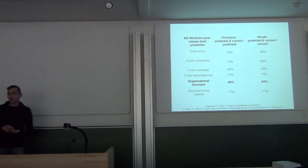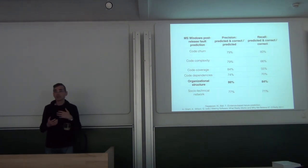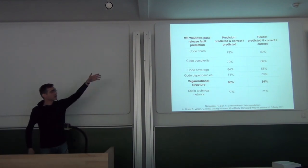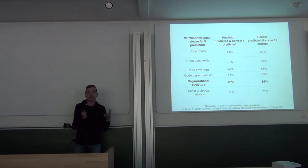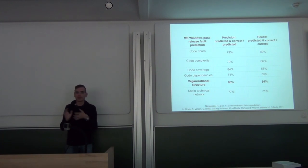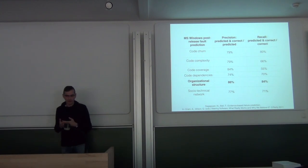Just to give you some empirical data, because as an empirical researcher I believe in this kind of data. This is a study by Nachiappan Nagappan and Tom Ball on evidence-based failure prediction. They tried to predict post-release defects in Windows Server components based on all kinds of metrics related to the amount of change in source code, complexity of the source code, and so on. You see that the best prediction has been obtained based on metrics which are related to collaboration, which are related to the organizational structure.